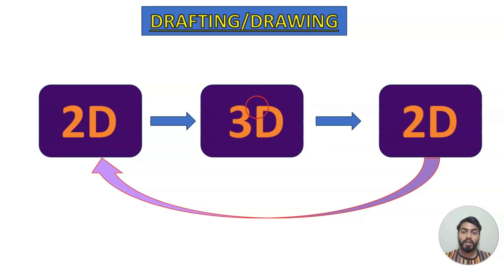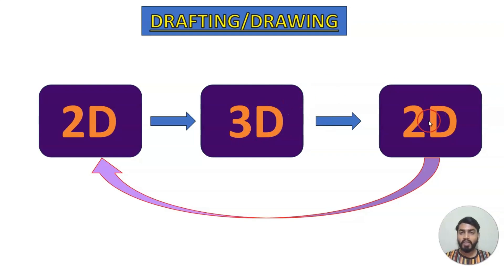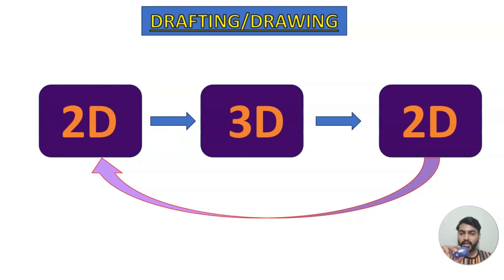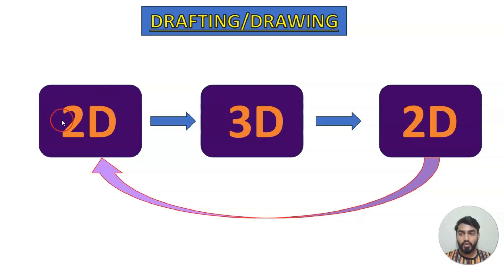Then what is the need for converting 3D back to 2D? For example, we have created a 3D model from a 2D drawing. But whatever internal features are there — internal bolts, screws, nuts, holes — we will not be able to see them properly from outside in the 3D view. However, those internal details will be shown in the 2D drawing.